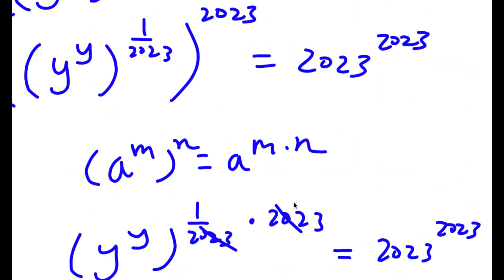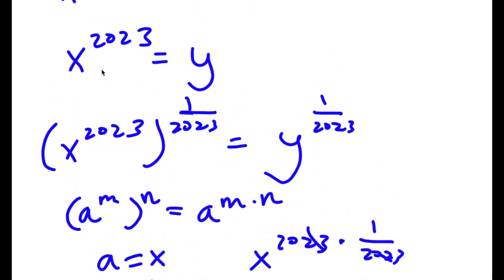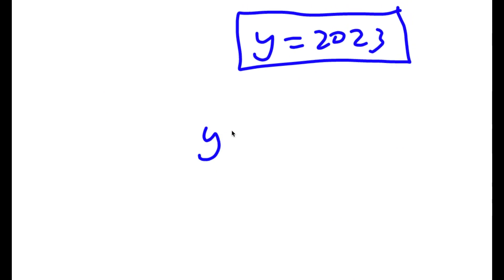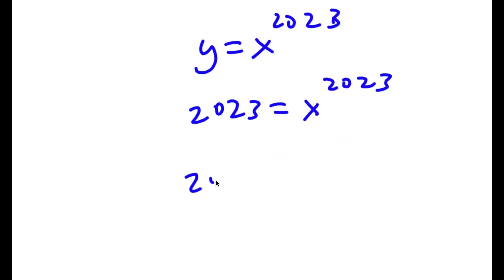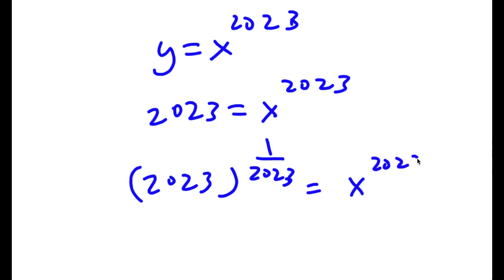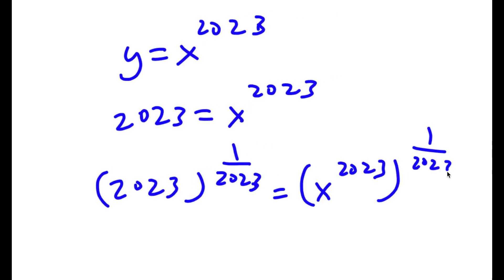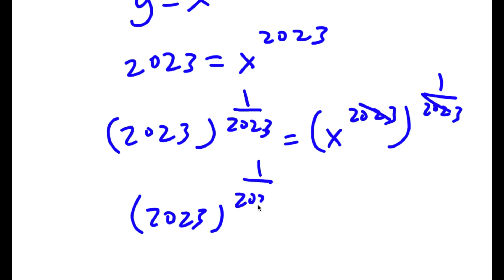However, we are not done yet because y isn't what we're solving for — we are solving for x. Remember, we set y equal to x to the power of 2023. So if y is equal to x to the power of 2023 and y is equal to 2023, then 2023 is equal to x to the power of 2023. Taking the power of 1 over 2023 on both sides, these cancel out and I'm left with 2023 to the power of 1 over 2023 is equal to x.